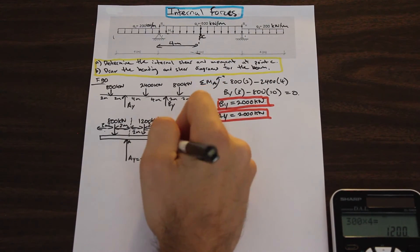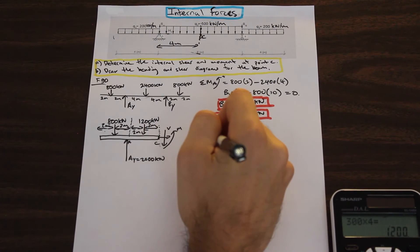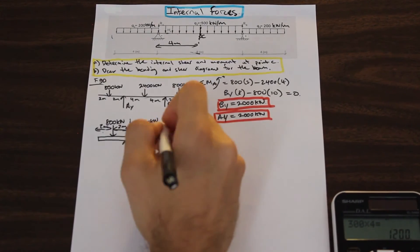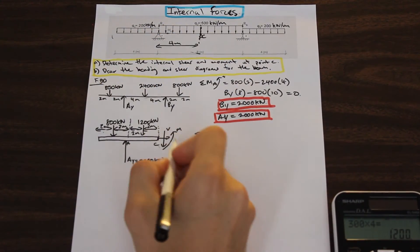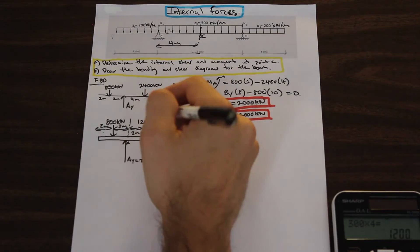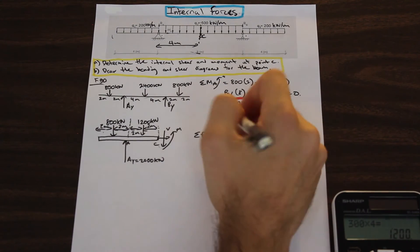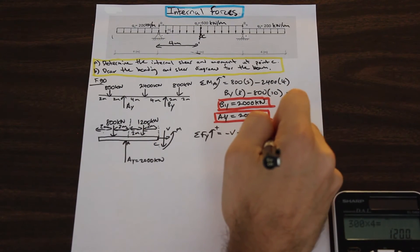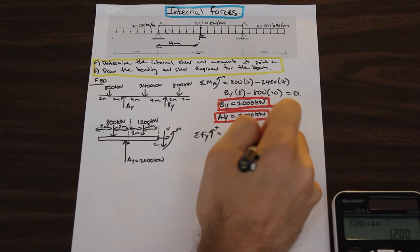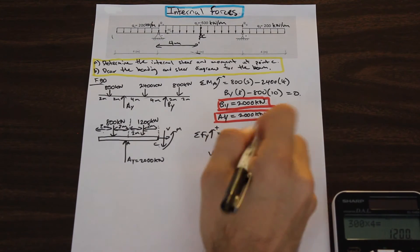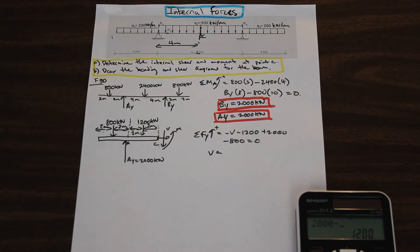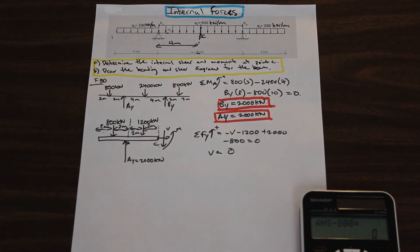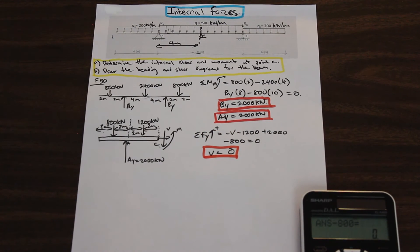Let's solve for the shear. Taking forces in the y-direction with up as positive: whenever you cut the beam and look at it from the left side, V is always drawn downward — so it appears as negative V in the equation. We have negative V, minus 1200 kN, plus 2000 kN, minus 800 kN, all equal to zero. So V equals 2000 minus 1200 minus 800, which equals zero. The shear force at the center of the beam is zero.